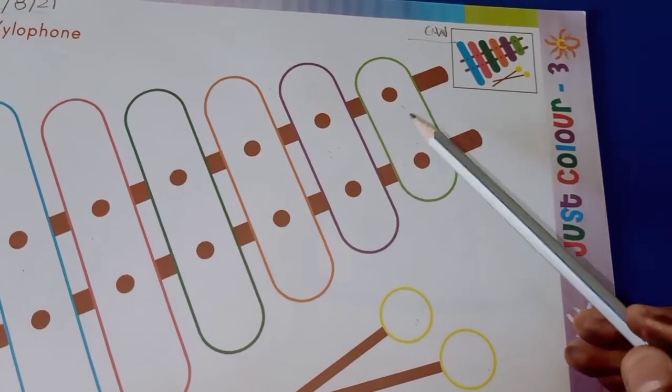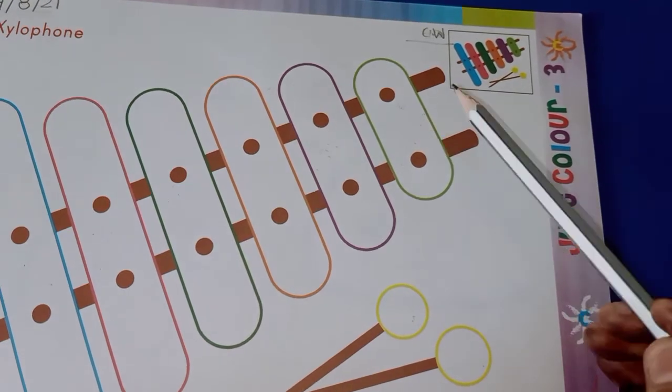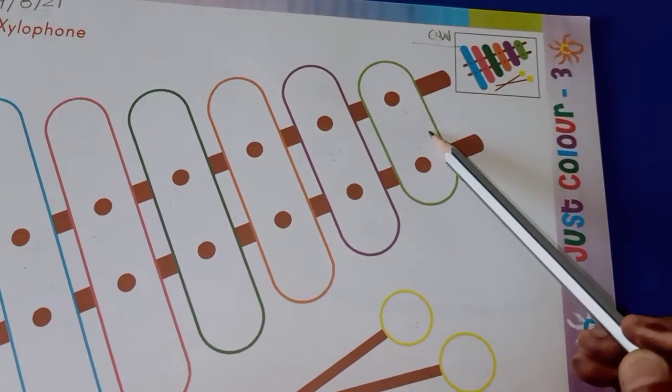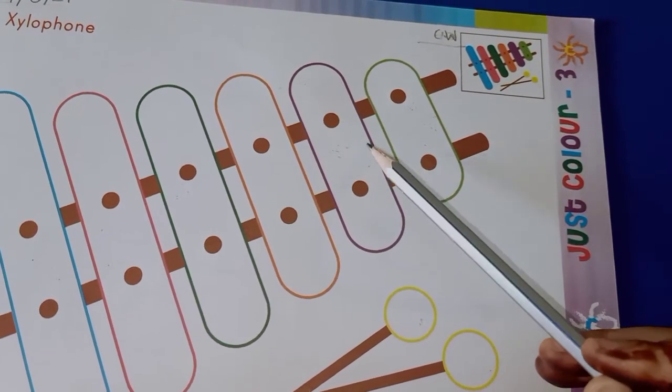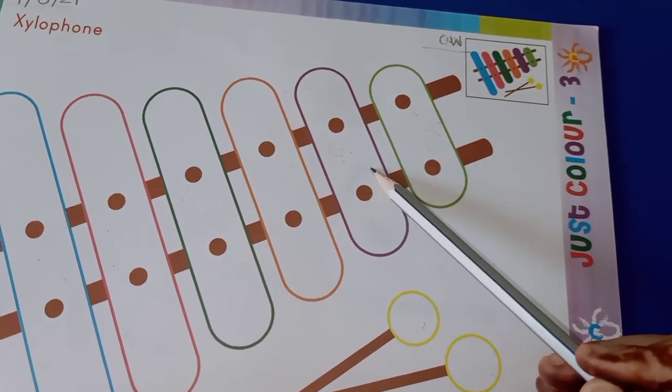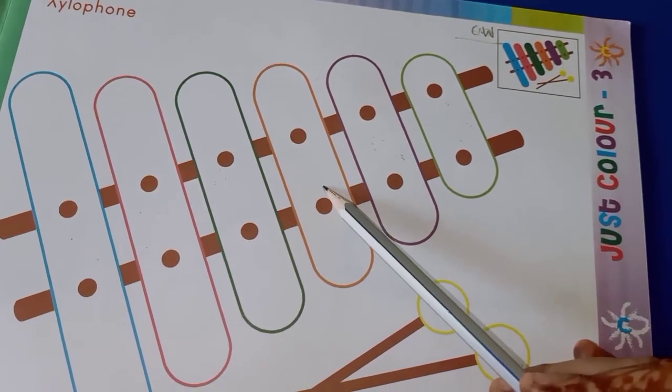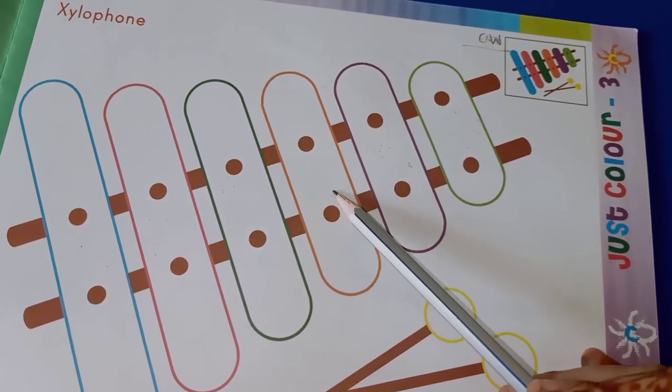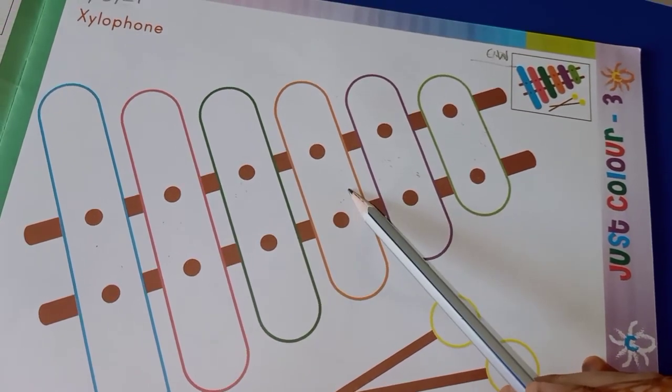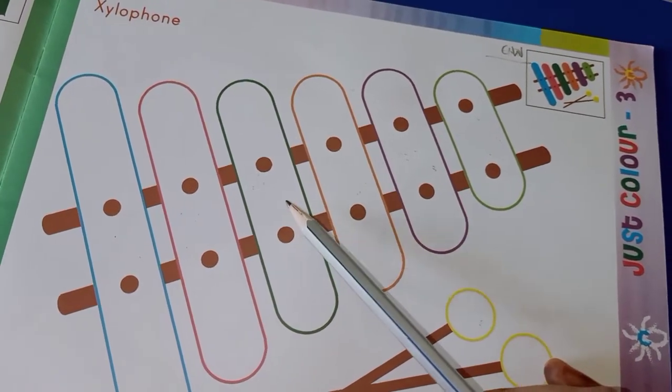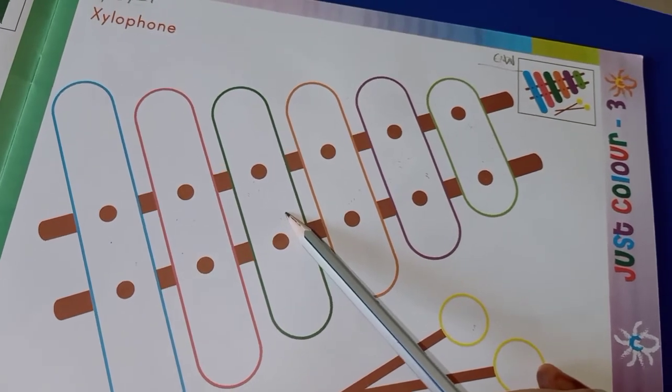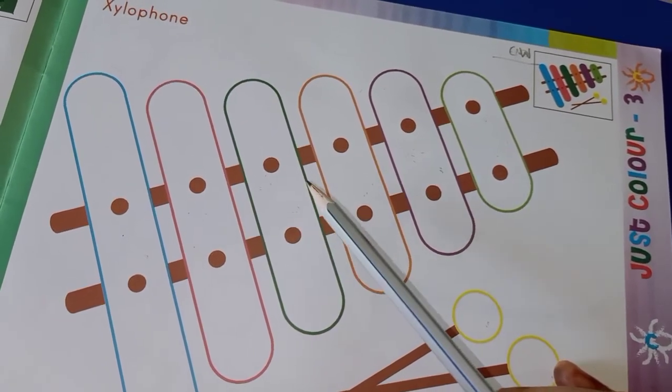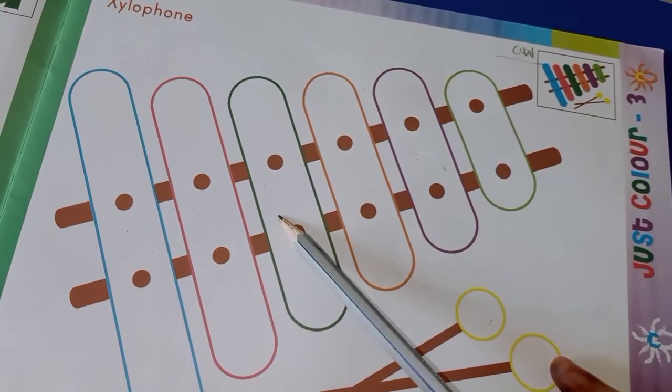Look at here. The outline is green, so we will use green color. Now, the second outline is purple, we will use purple color. The third outline is orange, we will use orange color. The fourth outline is dark green, so we will use green color.